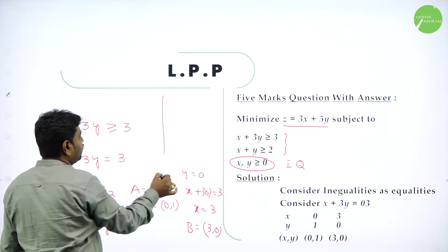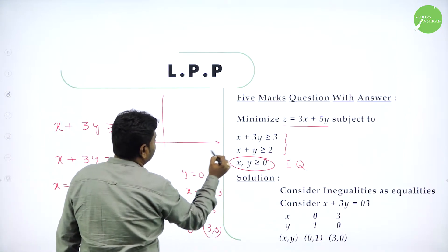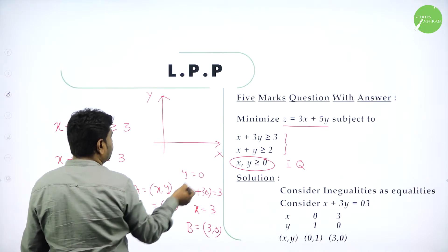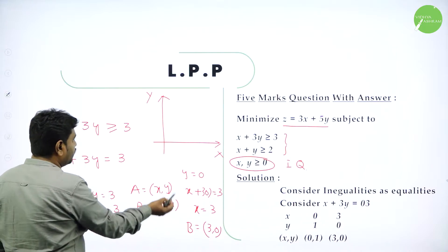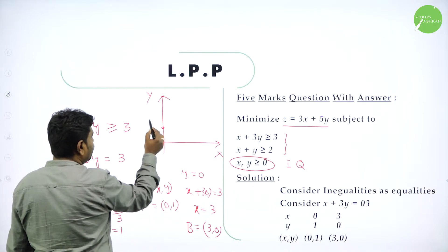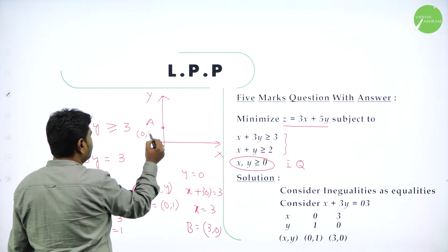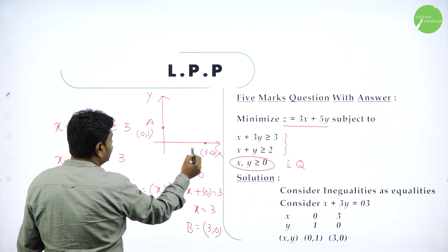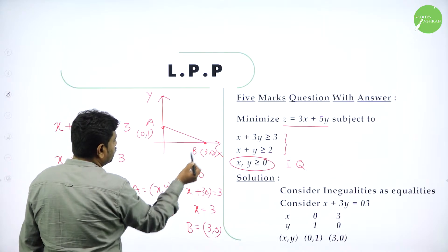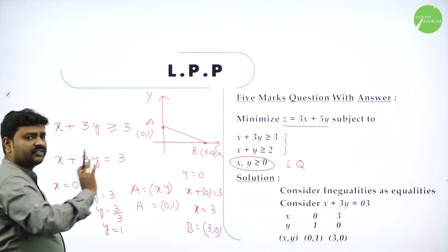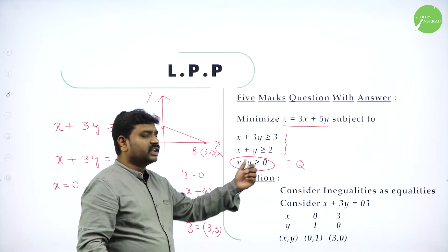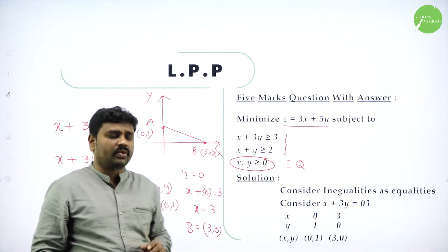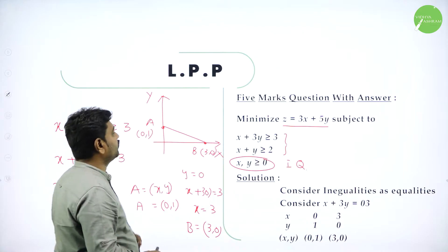Now we need to plot the graph. On the Y axis we got point A: 0 comma 1. On the X axis we got point B: 3 comma 0. I will draw the line within the first quadrant, because X, Y greater than 0 — X value and Y value will be positive only in the first quadrant. You need two minimum points to draw a line; you got the line. Restrict the graph within the first quadrant.